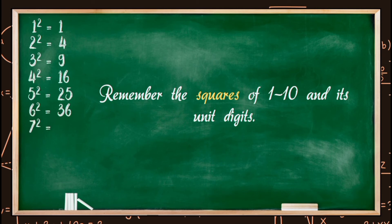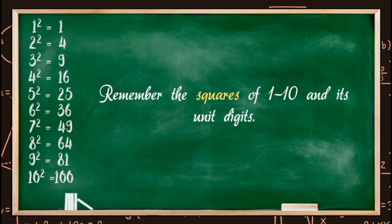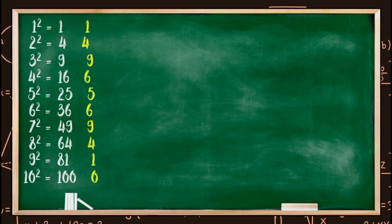The square of 1 is 1, the square of 2 is 4, the square of 3 is 9, the square of 4 is 16, and so on and so forth. The unit digits are the numbers at the end of each square. When the unit digit of a number is 4, the unit digit of the square root of that number will definitely be 2 or 8. Similarly, this can be applied to other numbers with different unit digits.